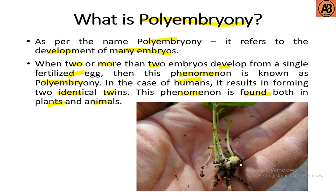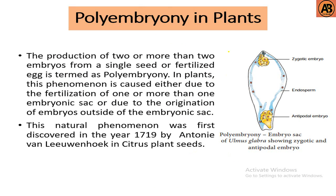In polyembryony, different types of embryos develop from a single egg cell. In plants, the production of two or more than two embryos from a single seed or fertilized egg is termed as polyembryony. This phenomenon is caused either due to fertilization of one or more than one embryonic sac, or due to the origination of an embryo outside of the embryonic sac.